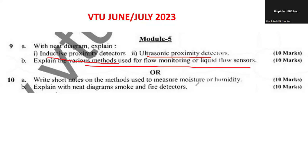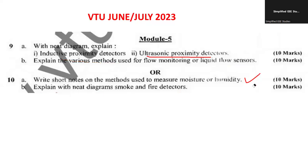Write a short note on the methods to measure moisture and humidity — you can go ahead with any type of method. Draw and explain the neat diagram for smoke and fire detectors. This is also important. All questions carry 10 marks — 5 marks for your schematic diagram, graphical representation, waveforms, etc., and the remaining 5 marks for your better explanation.